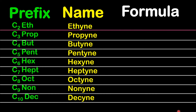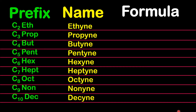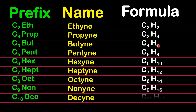Now let's look at the molecular formula for each member of the alkyne homologous series, stopping at ten carbons. The simplest one is ethyne, C2H2. For example, heptyne has seven carbons: seven times two is fourteen, minus two gives twelve hydrogen, so C7H12.